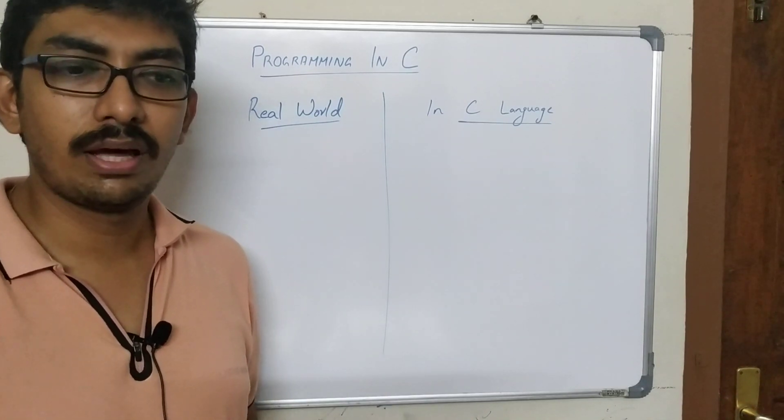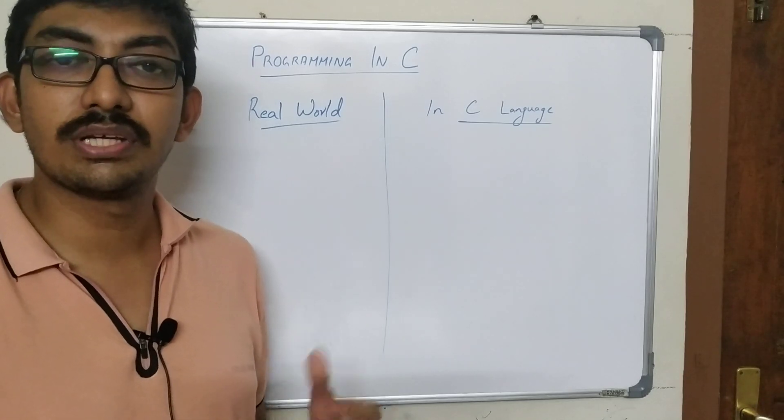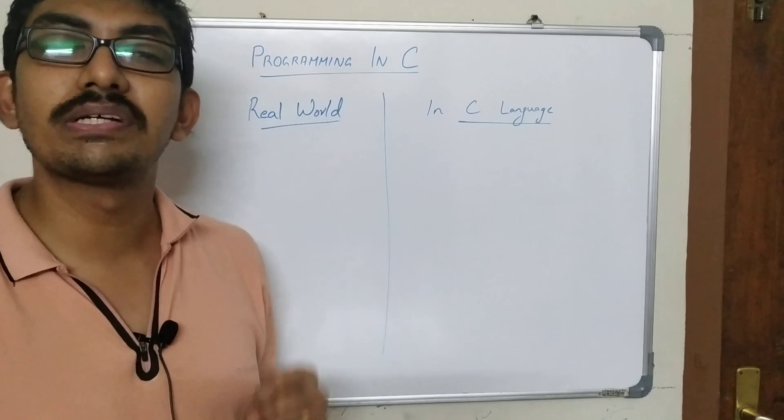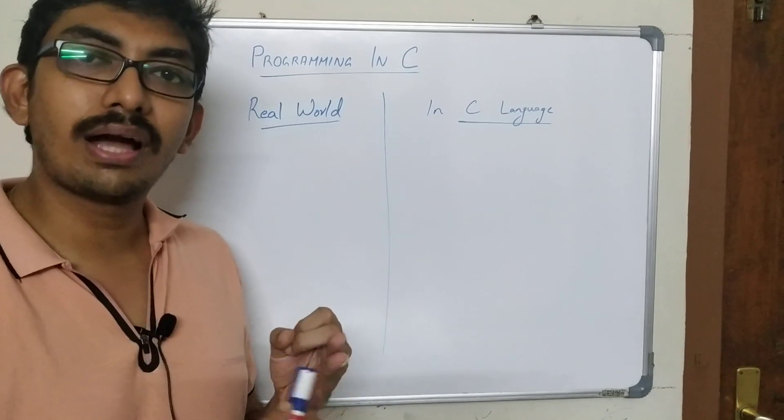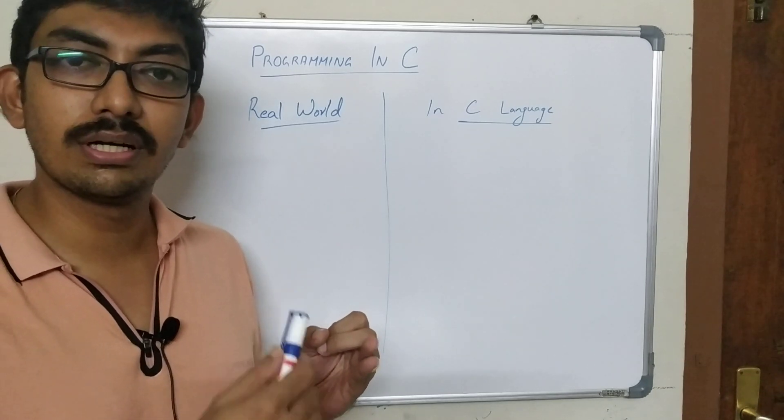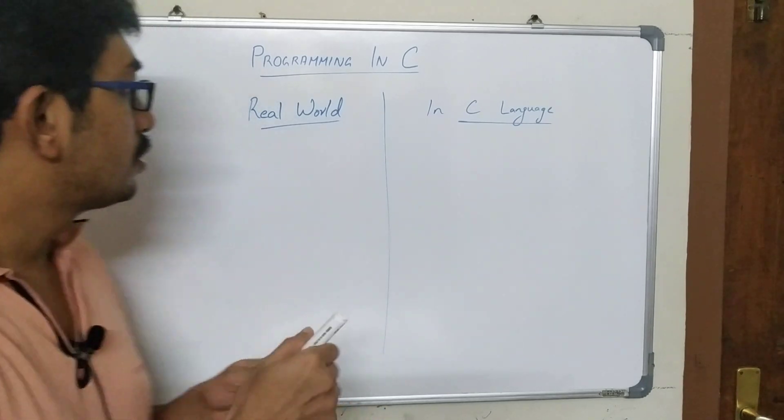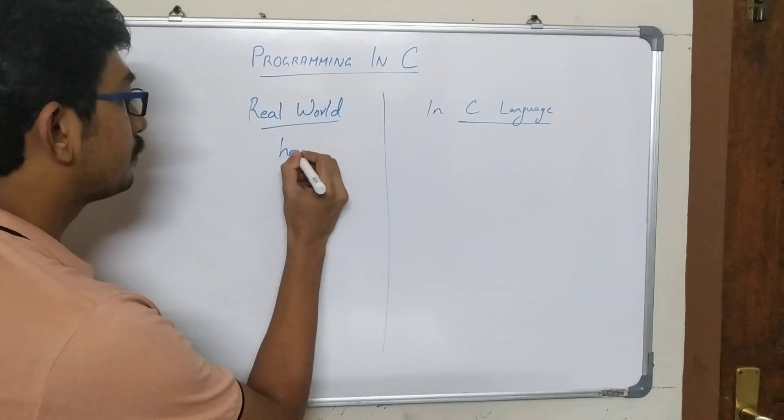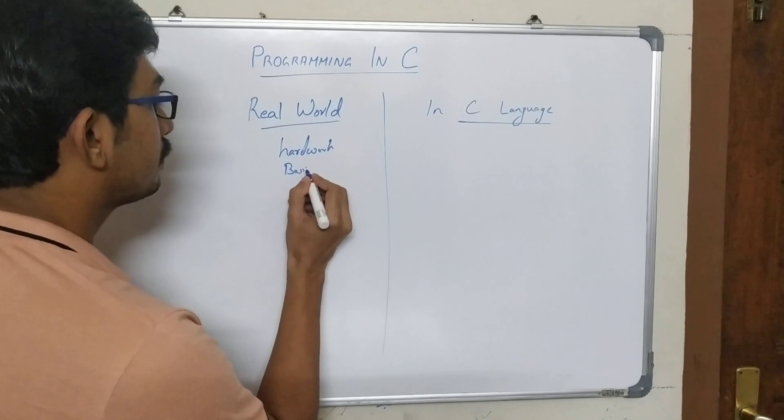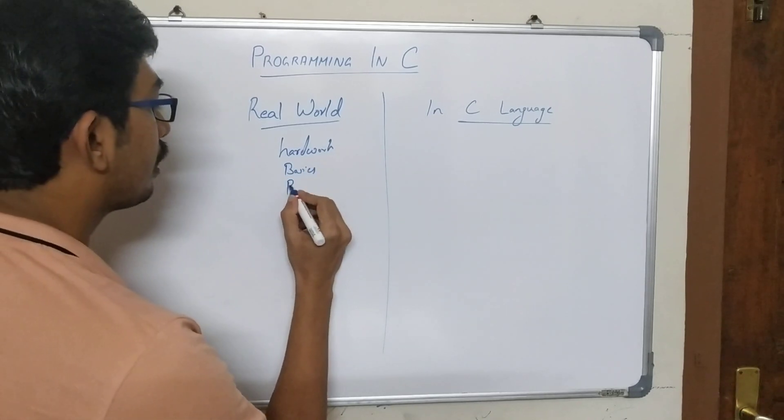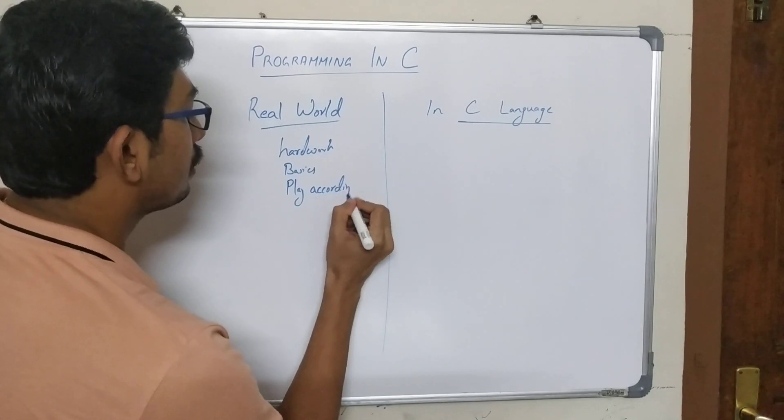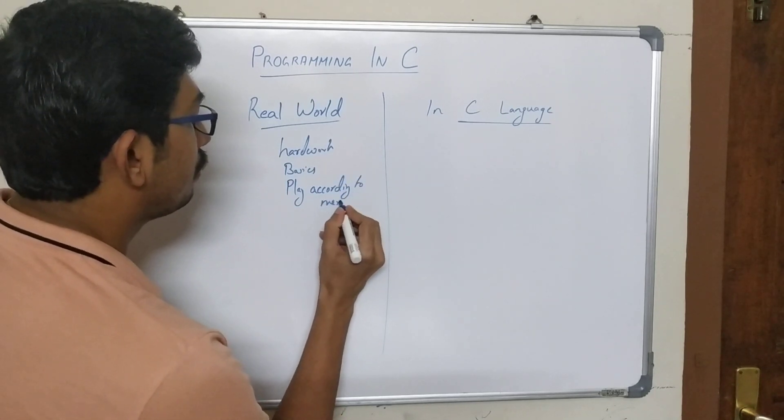I have seen an interview of Sachin Tendulkar where he was asked his secret of success. What he told was he sticks to the basics, he played the ball according to the merit, and before all that you have to put in a lot of hard work. So the secret was hard work, sticking to basics, and playing according to merit of that ball.